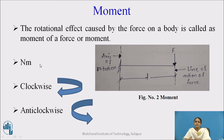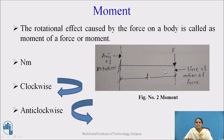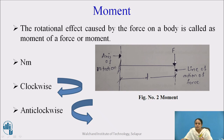The rotation of force in the clockwise direction is considered as positive moment, while anti-clockwise direction is considered as negative moment. In this figure, force F is acting downward, rotating about the fixed point in the clockwise direction, causing a positive moment.